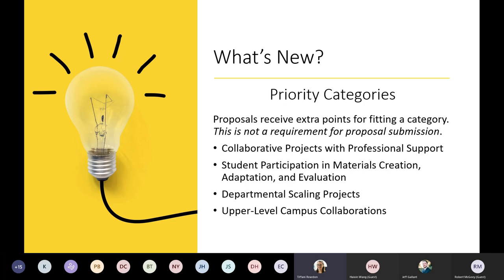We also have departmental scaling projects as a priority category this year. These are meant to emphasize departmental commitment to implement the materials in all sections of the course across the department. Solely the potential for departmental scaling does not qualify for this category — you should still tell us if there is potential, but the commitment from the department must be there to receive priority points. For this category, the department chair's letter of support needs to express their commitment to at least piloting the project in all sections across the department.